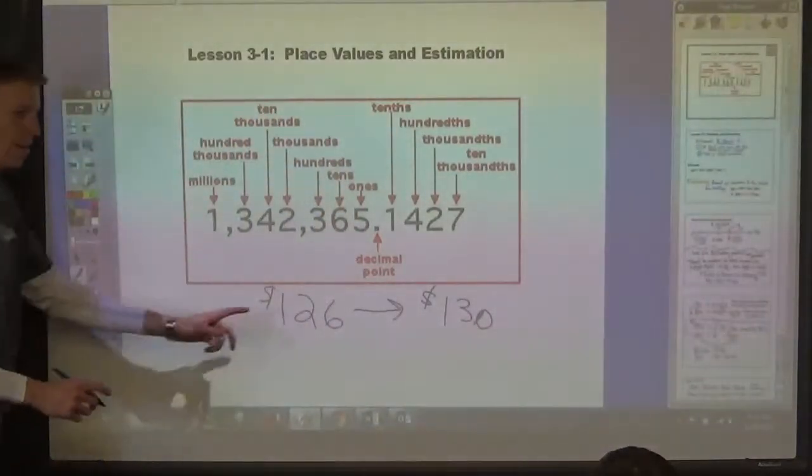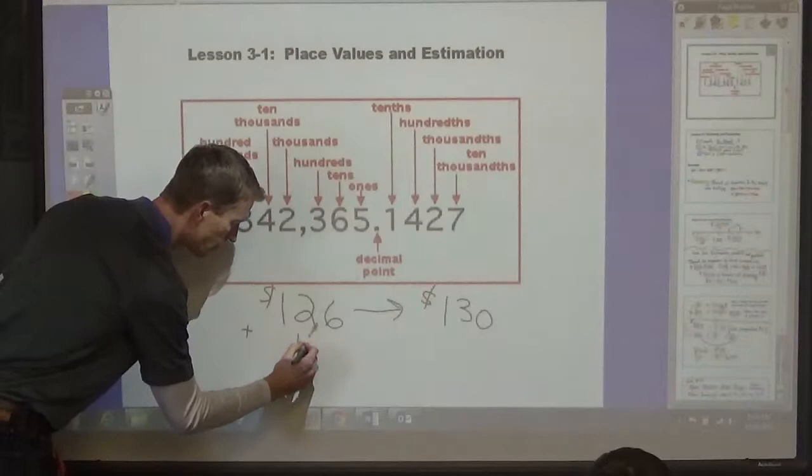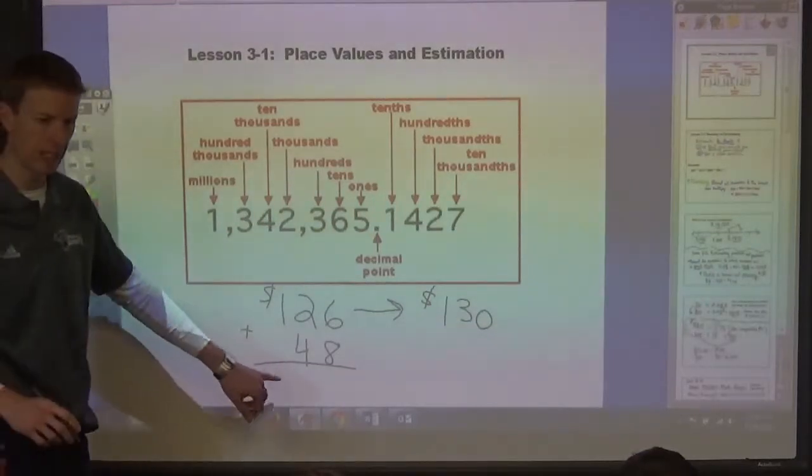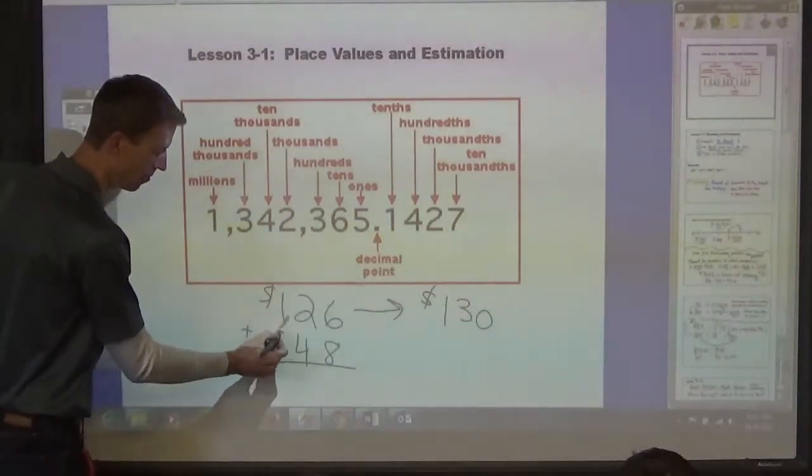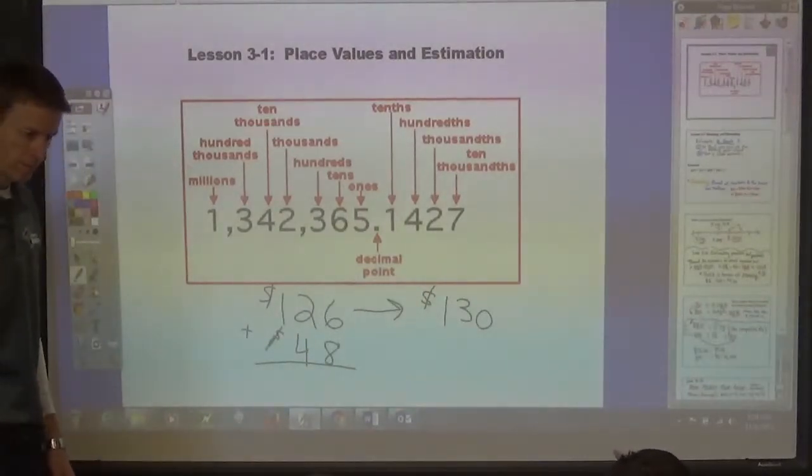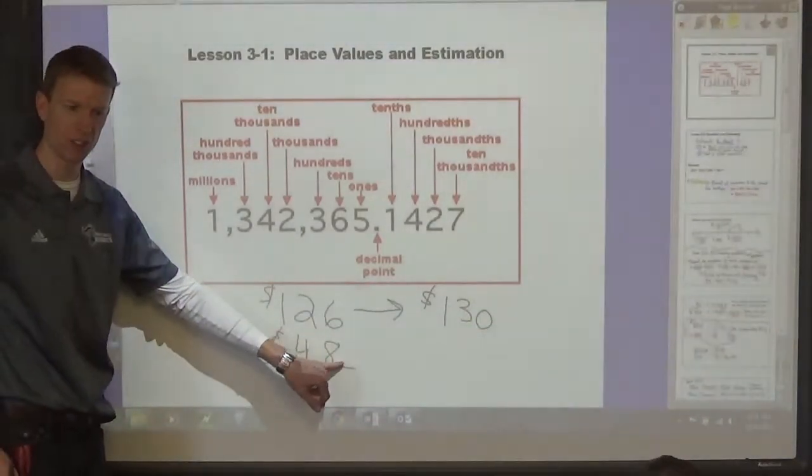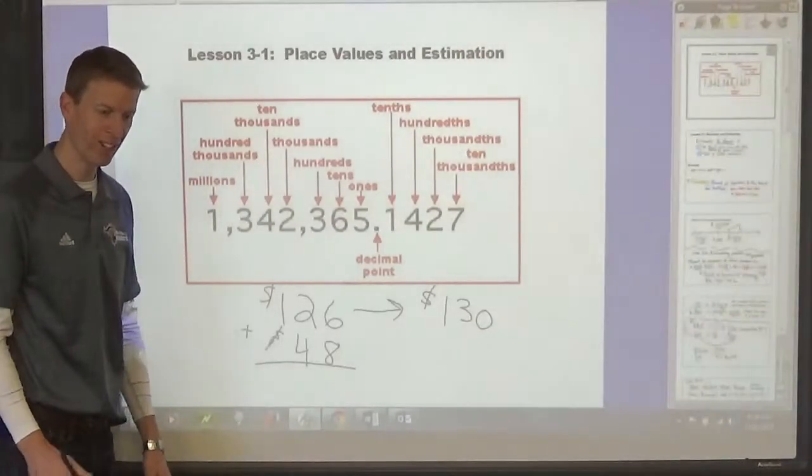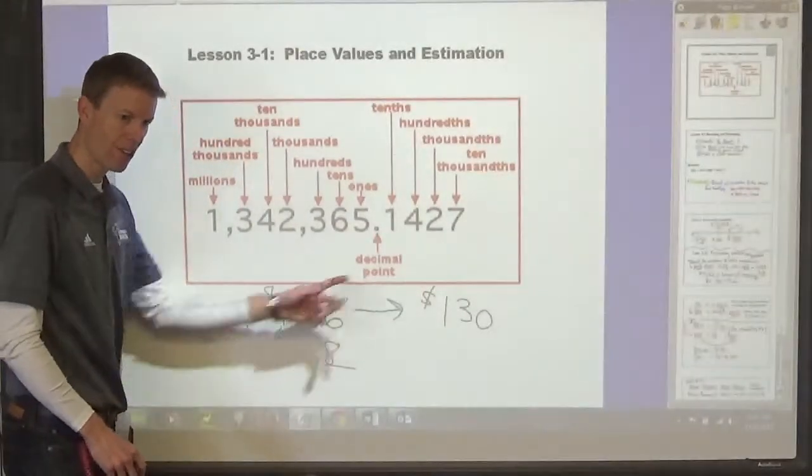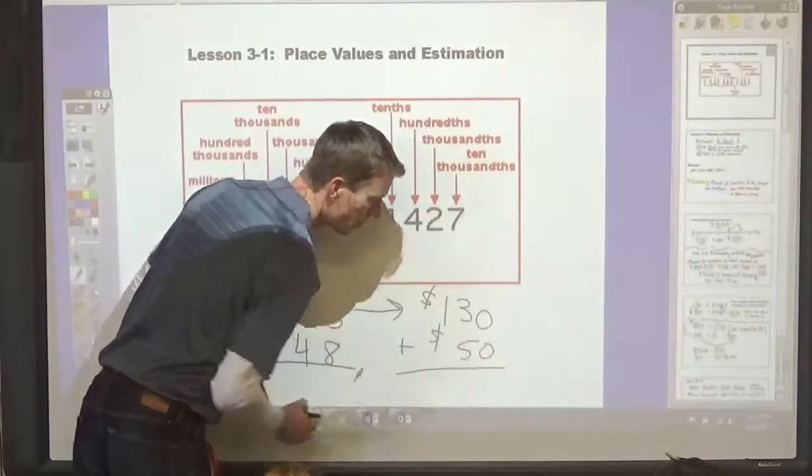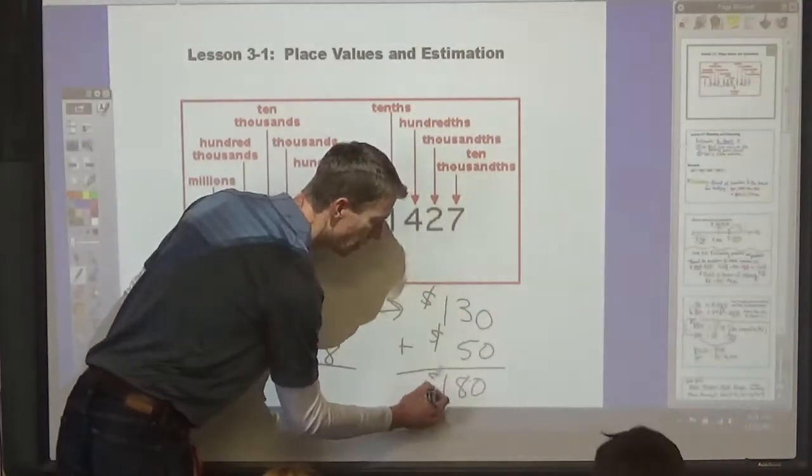So, if you have one hundred twenty-six plus forty-eight dollars, what would an estimate be? How would we estimate this? Melita. One hundred thirty is closer to fifty. Plus? Plus forty. Plus forty-eight is closer to fifty. So, what would we do? Thirty plus fifty. Yep. One hundred eighty dollars. So, one hundred eighty dollars would be the best estimate.